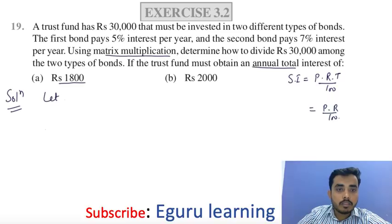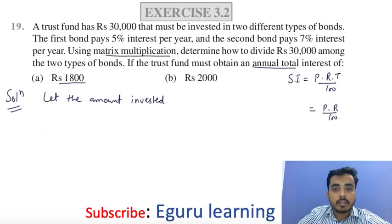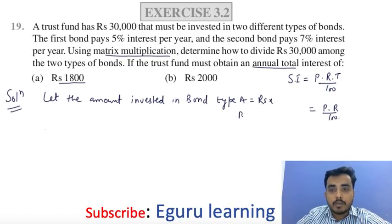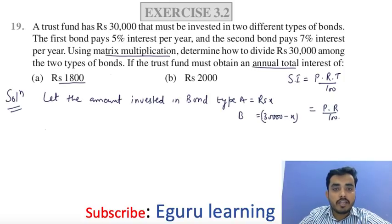Let the amount invested in bond type 1 be X. So the amount invested in bond type B, the second bond, will be 30,000 minus X. Now we need to use matrix multiplication to find out the total interest to be Rs. 1800.